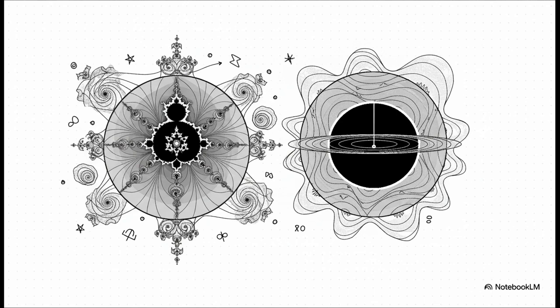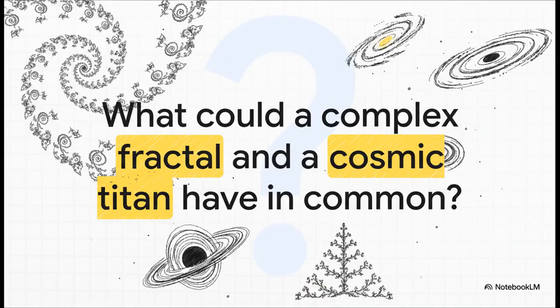It's a thought experiment that connects two things you'd probably never think belong in the same sentence. Over here, we've got the Mandelbrot set, that famous, infinitely complex mathematical fractal. And on the other side, a diagram of a basic Schwarzschild black hole, one of the most mysterious objects in the entire universe. So what in the world could they possibly have in common?